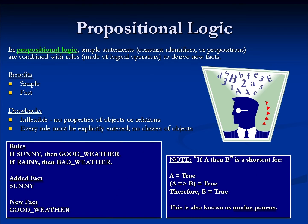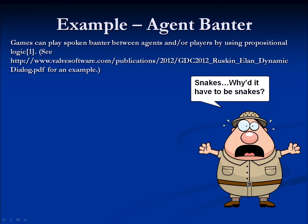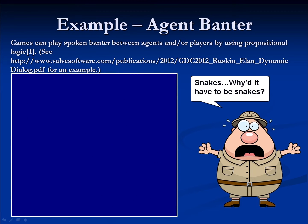As an example, if our rules were: if sunny, then good weather; and if rainy, then bad weather; and we added the fact sunny to the rule base, the conclusion we should be able to draw is good weather. One example of how propositional logic is used in games is in agent banter — we can have players whose dialogue is triggered by certain conditions being met. For instance, if a snake is present, then the agent will say, I hate snakes.